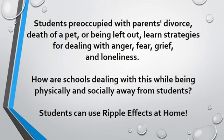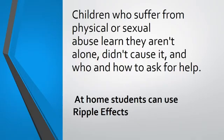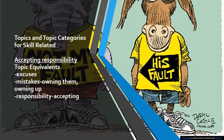I'm just going to go through a few of the topics and then we'll look at the whole list. There are more than these — these are just a few that I put on this PowerPoint from Ripple Effects. Topics and topic categories for skill-related: Accepting Responsibility is one. The topics under it include excuses, mistakes, owning them, owning up, responsibility, and accepting responsibility.